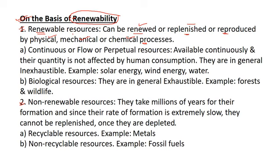There are two subtypes of renewable resources. The first subtype is continuous resources, also called flow resources or perpetual resources. Continuous or flow resources are renewable resources which are available continuously, and their quantity is not affected by human consumption.